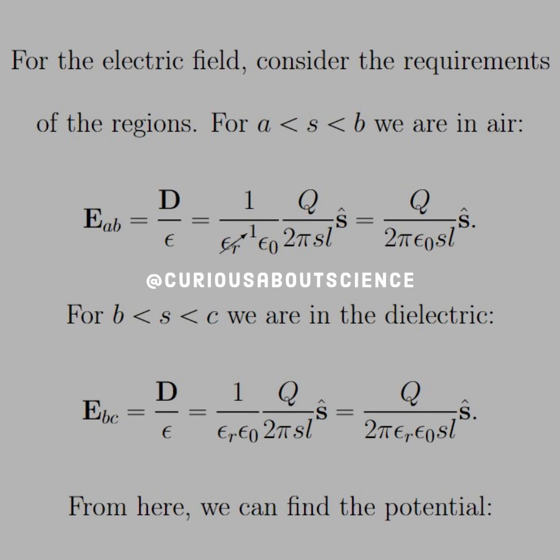However, for B to C, we are in the dielectric, so we have to keep both of the permittivity terms there. But we get a similar electric field just with epsilon R instead of 1.